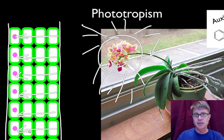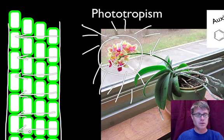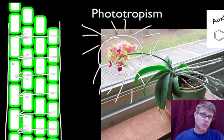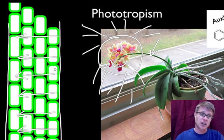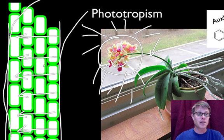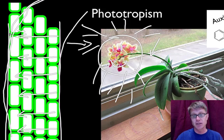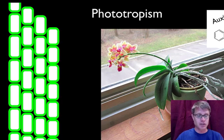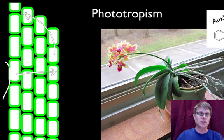Now what does that do to the cells? It causes the cells where the auxin is to get longer — these ones not as long, these ones aren't going to change at all. So instead of just making it taller on that side, since all these cells are connected, it's going to cause this stem to actually grow towards the light. In other words, since these are all attached, the whole thing is going to move towards the sun. And if I put the sun on the other side, now the auxin would move in that direction and the stem is going to bend back the other way.